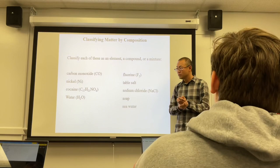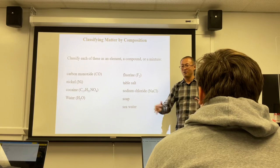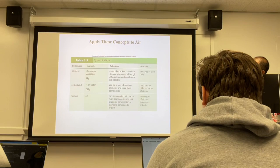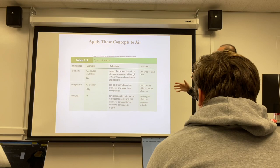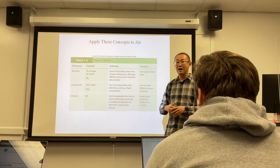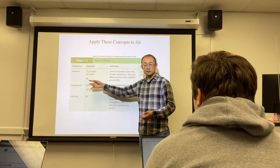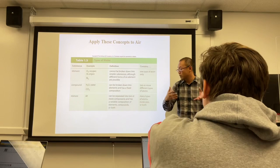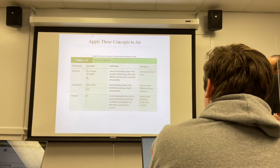This is what I need you to know about classification — I will give you something and you tell me what it is. If we apply this classification to the air: oxygen, nitrogen, and argon are elements; water and carbon dioxide are compounds; and all together, air is a homogeneous mixture.